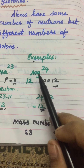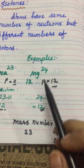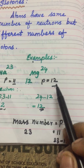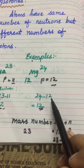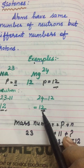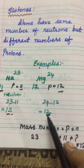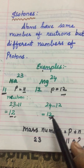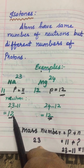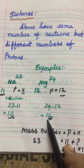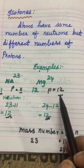Now we have to find out the neutron value for magnesium. Magnesium mass number is 24 and proton value is 12. So 24 minus 12 is 12. The magnesium neutron value is also 12. So two different elements have the same neutron value but different proton values.